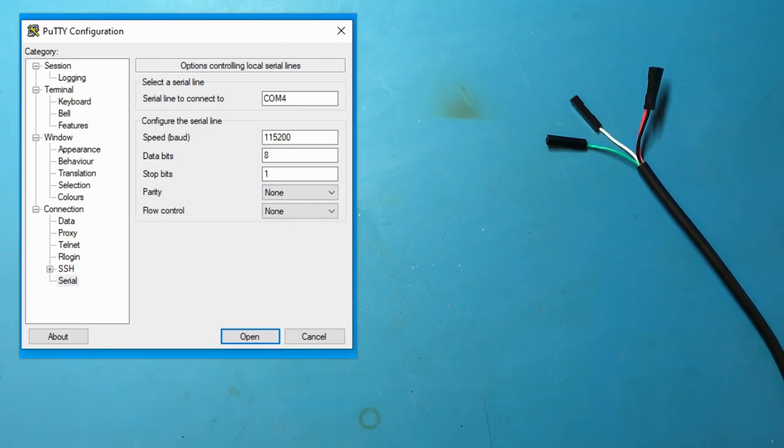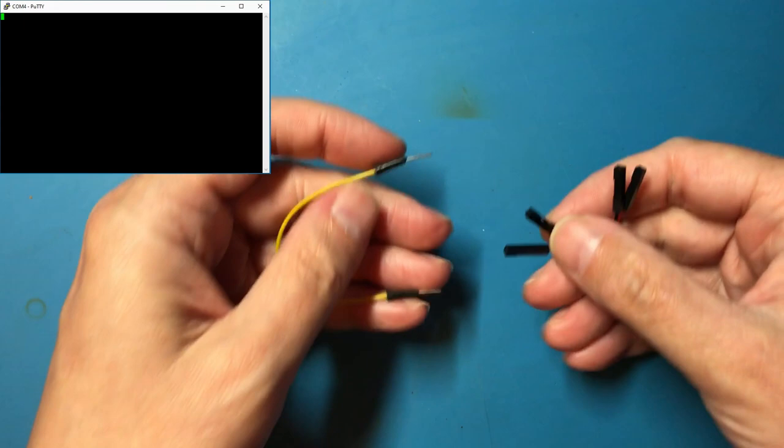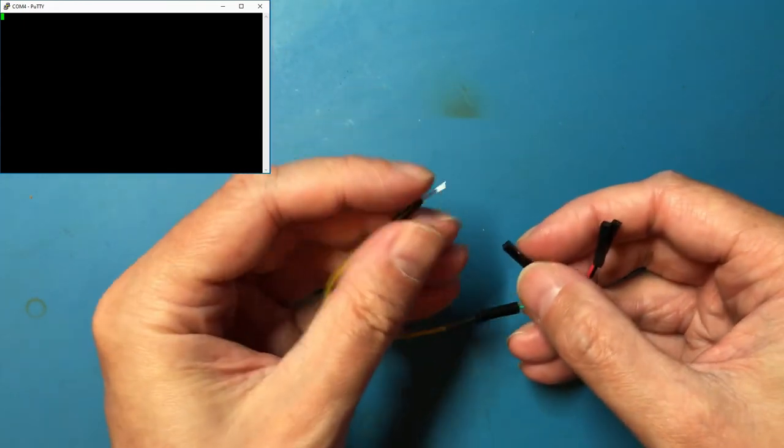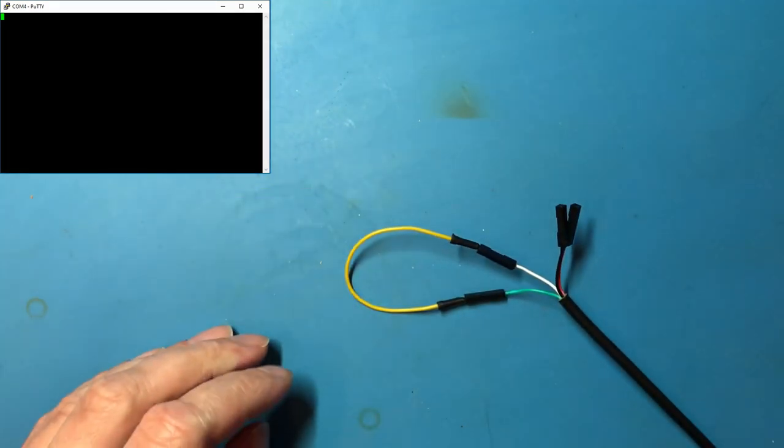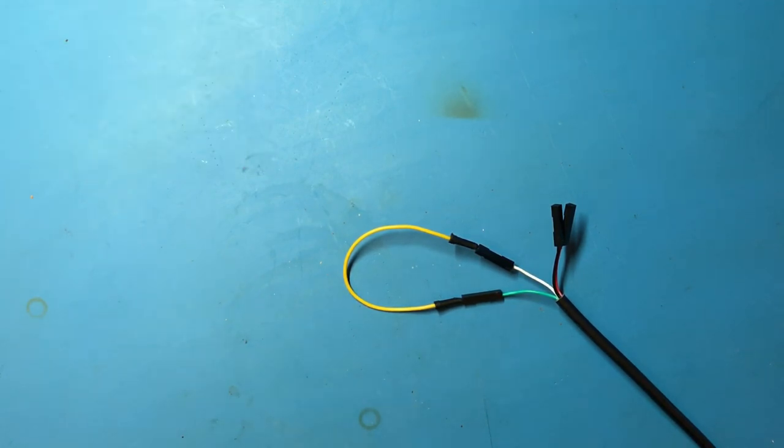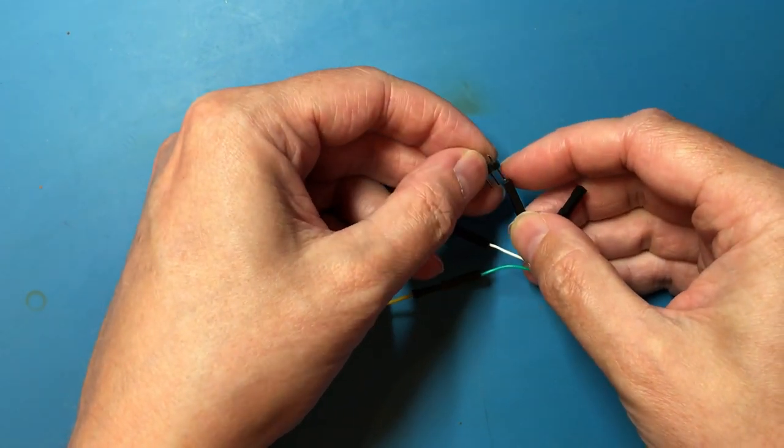I've got my terminal window and it doesn't do anything, but very simply I could take the transmit and receive lines and cross connect them. Now I can type on the keyboard and get the value echoed straight back to me.